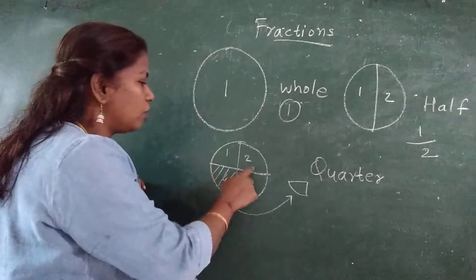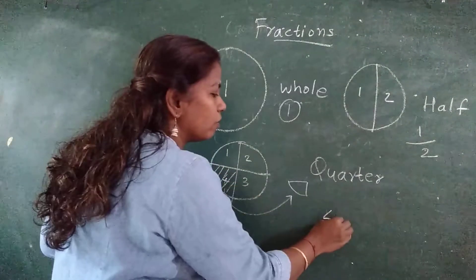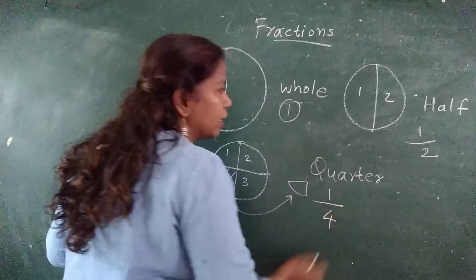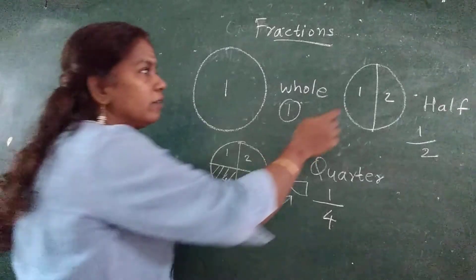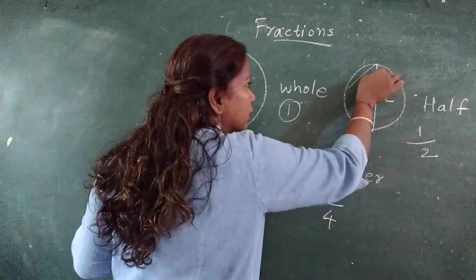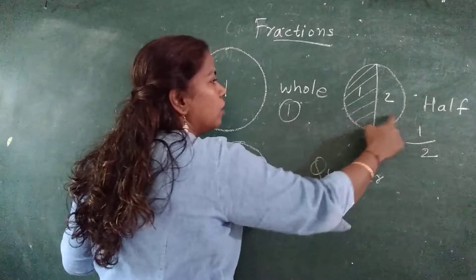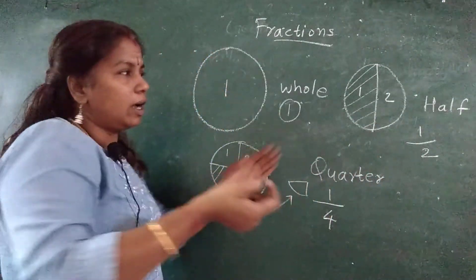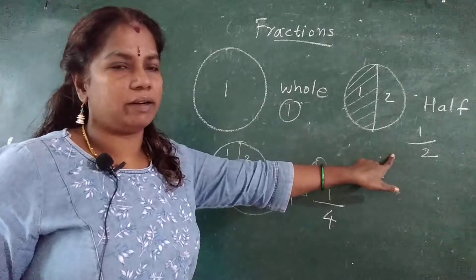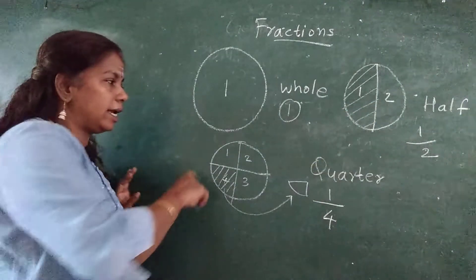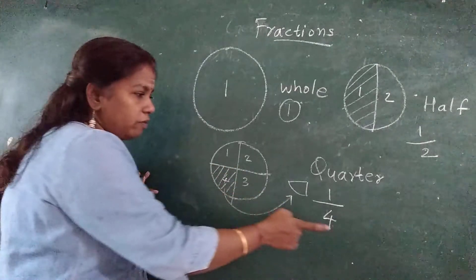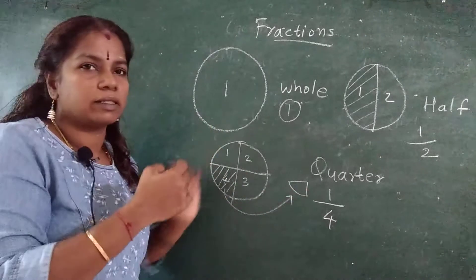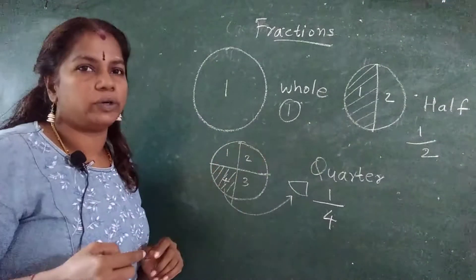Now how many parts are there? Four. And I have shaded one part. Here for better understanding I will do one thing. I will shade one part. Out of two I have shaded one part, so half. Half in words and half you write in this manner. Now here I have divided the circle into four parts and I have shaded one. That is one upon four.